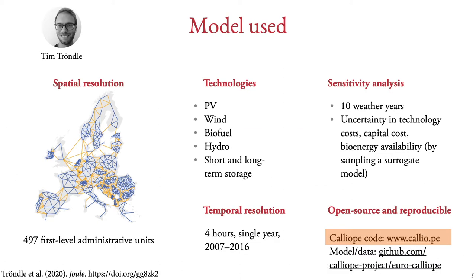This model was built with Calliope. The key thing I want to highlight is that it was purpose-built to solve a particular question — and because this question was around the self-sufficiency of political units, the spatial layout of the model follows political boundaries, rather than the physically existing transmission system. We only model those technologies actually needed to examine this self-sufficiency question. The whole thing — code and data — is available online under open licenses. Let's go into more detail about what Calliope and Euro Calliope actually are.